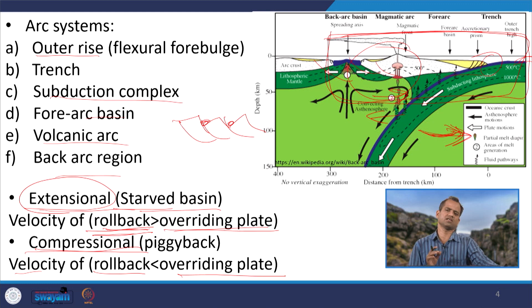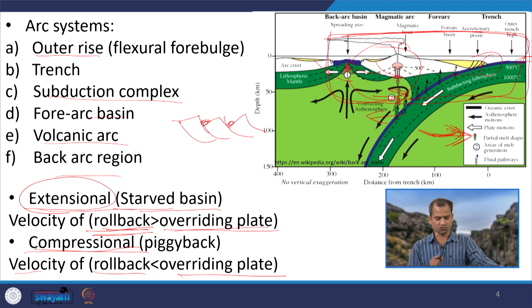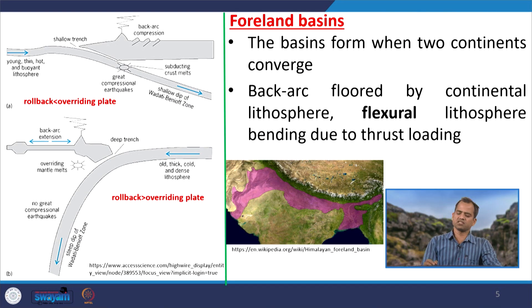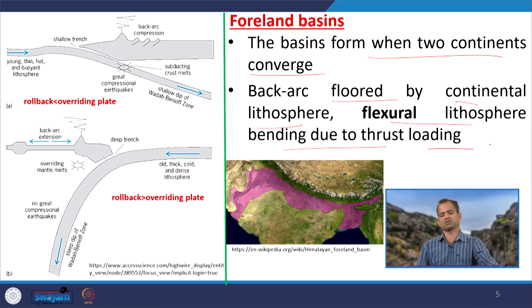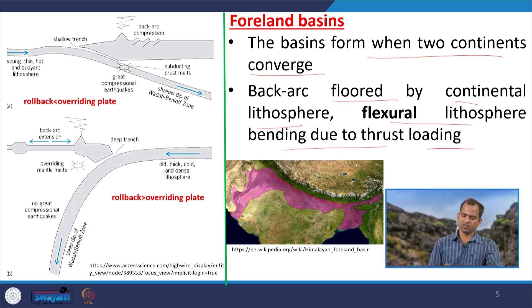Either way, we are getting a sedimentary basin, putting sediment in, and generating petroleum hydrocarbon naturally. Talking about the foreland basin: basins form when two continents converge, with back-arc floored by continental lithosphere and flexural lithosphere bending due to thrust loading. We have the Indo-Gangetic foreland basin as an example here.